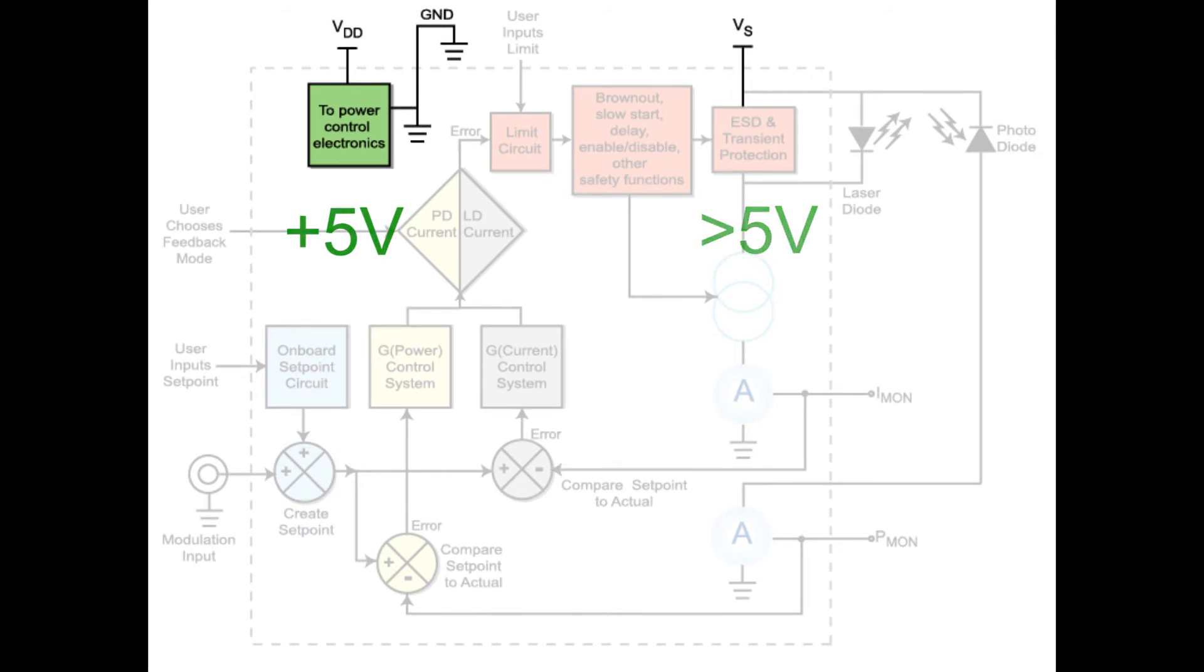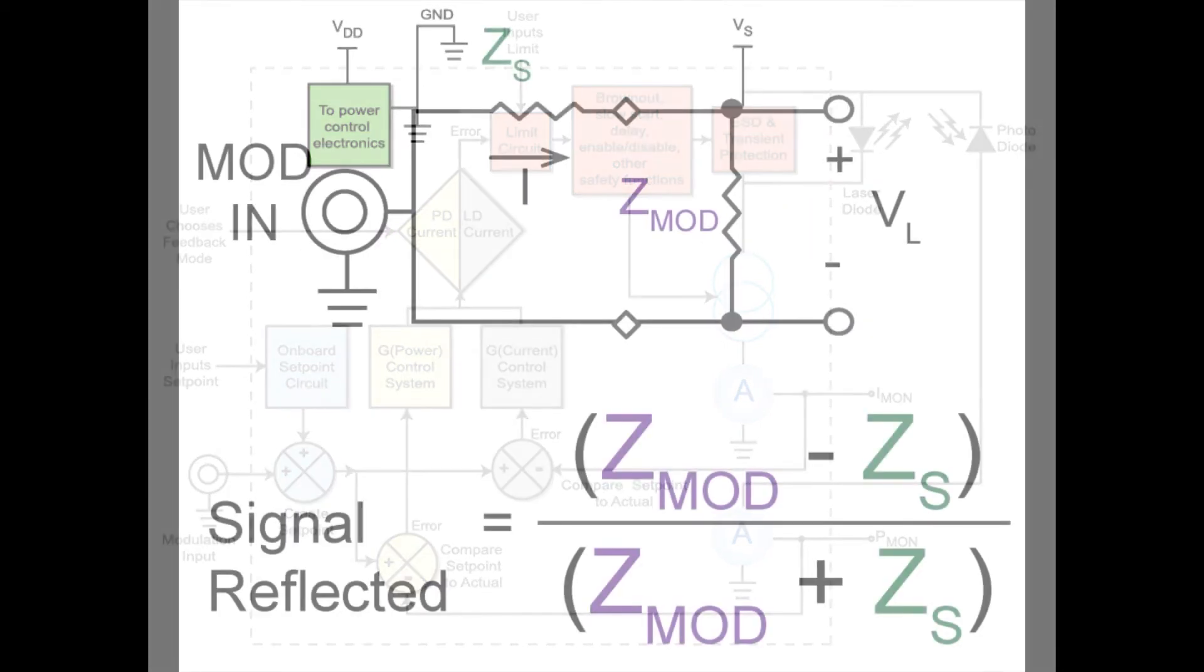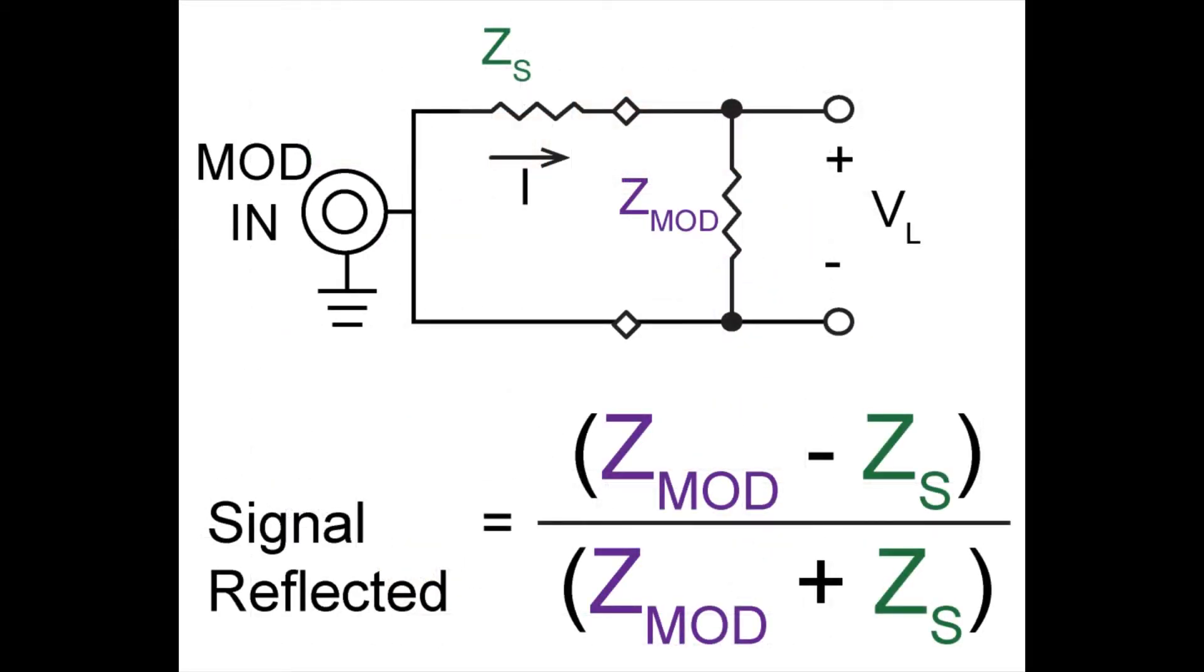Let's discuss some additional laser diode driver specifications. Input impedance is specified for analog voltage inputs, such as VSET or MODIN. At higher frequencies, the relative value of the impedance of the source and the input pin matter. The voltage of the modulation signal may be reduced if the values are mismatched. The fraction of the signal reflected at the interface is shown. Zmod is the impedance of the input pin, and Zs is the source impedance.